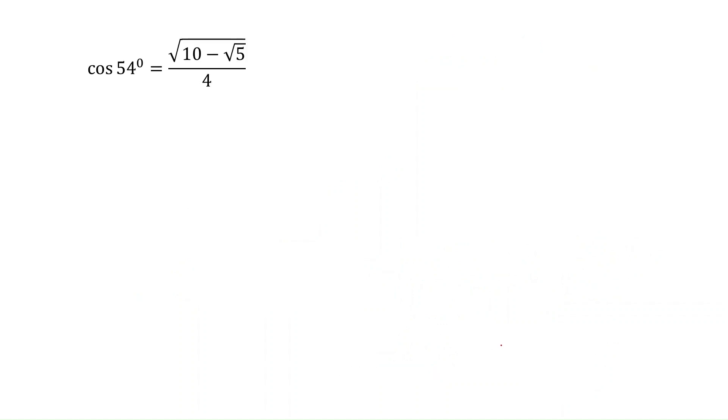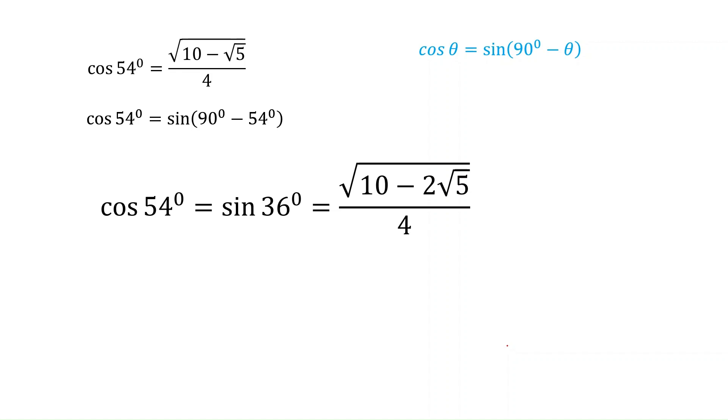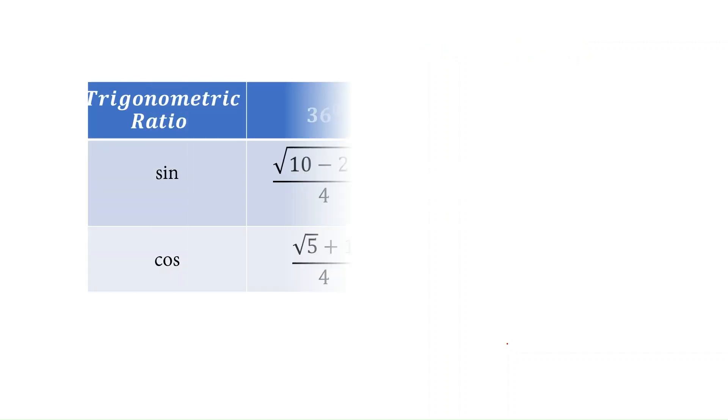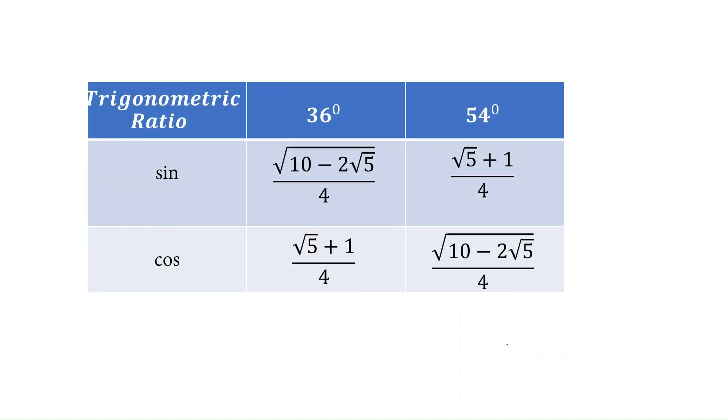From this, we will try to find the value of sin 36. As per the cofunction formula, cos theta equal to sin of 90 minus theta. In case of theta, if we substitute 54, cos 54 equal to sin of 90 minus 54. 90 minus 54 is 36. So cos 54 equal to sin 36 and that's the value. Now we know the values of sin and cos for 36 and 54. We use these values to find the value of tan.